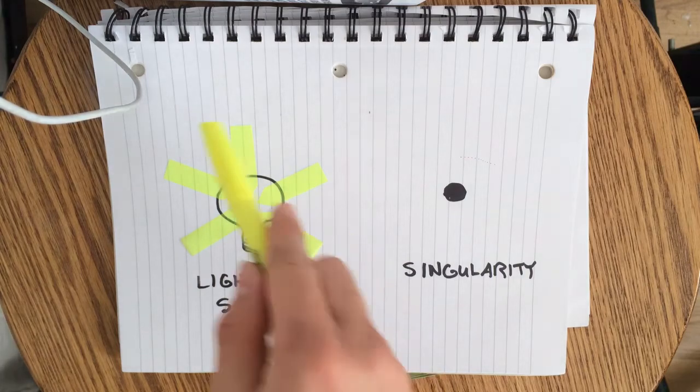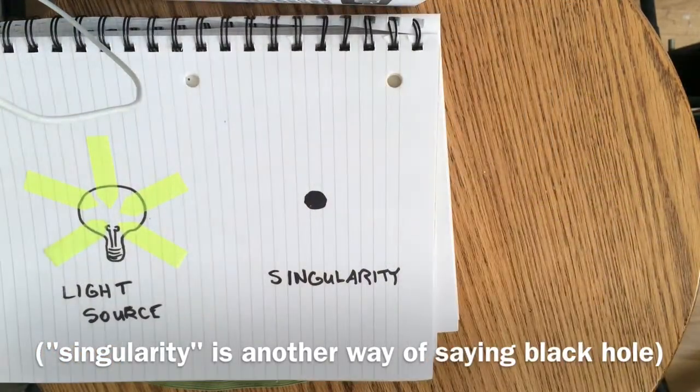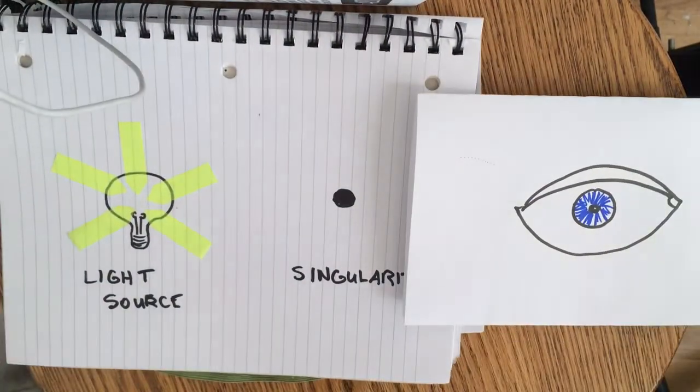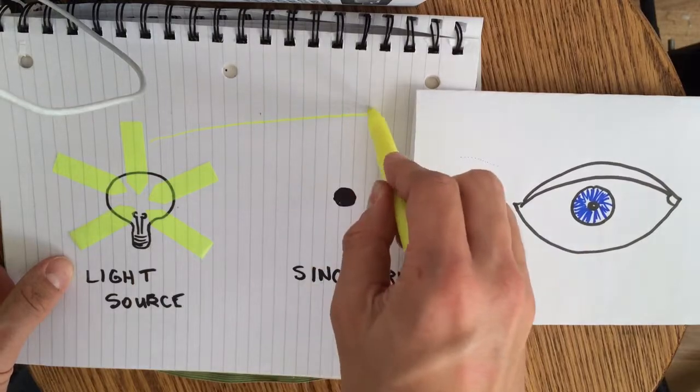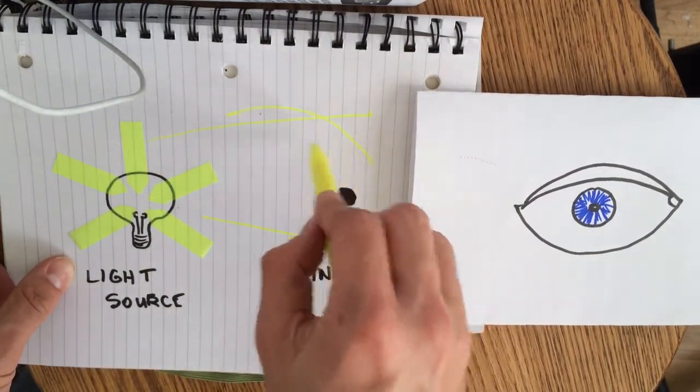For instance, if we have a source of light and a singularity, if we look from Earth at the source of light with a singularity in between us, what we end up seeing is an effect known as gravitational lensing, where the light coming from the source actually bends around the singularity.